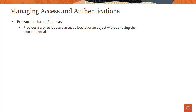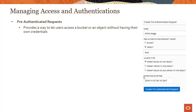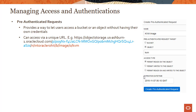A pre-authenticated request is a way to let users access a bucket or an object without having their own credentials. Creating a pre-authenticated request is pretty straightforward. You can create one either on the bucket or on the object, and you can have a variety of options — whether you just want reads on the object, writes on the object, or read and write both. Once you create a pre-authenticated request, users can access the object. If you're creating this for an object, a URL is generated like the one shown here, with a slash P portion appended that indicates it's a pre-authenticated request.